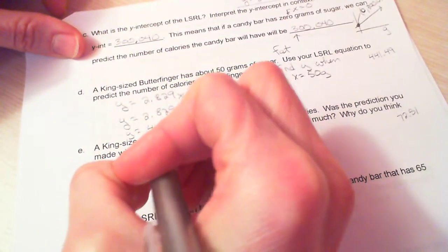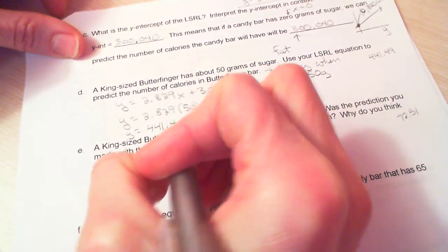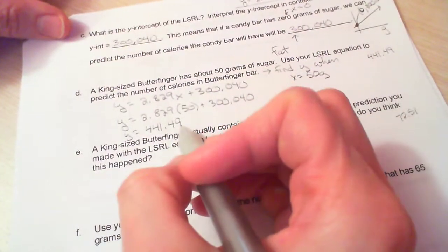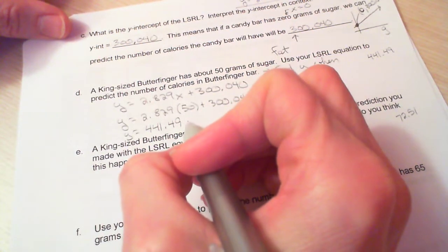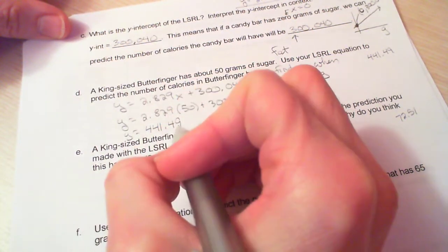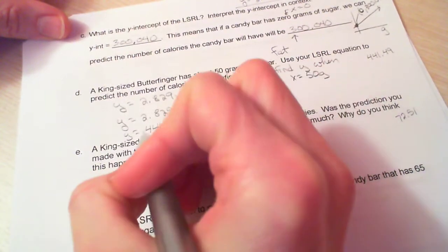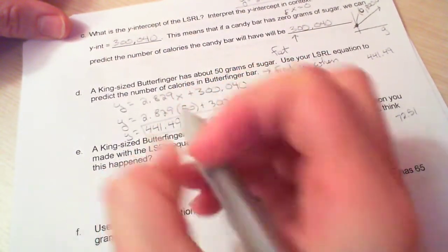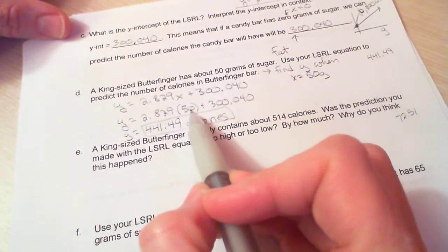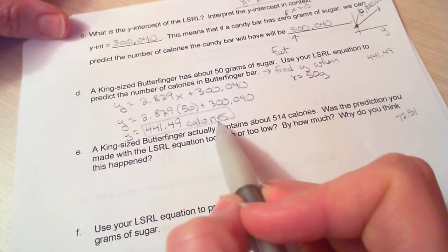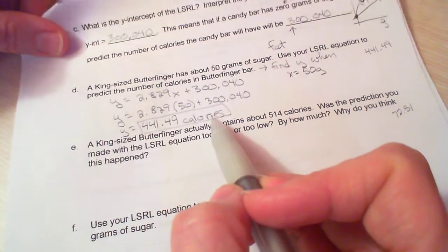So I'm going to do 2.829 times 50 plus 300.040, and I get 441.490. So y equals 441.49. Story problem requires a story answer. I have to have some units on here. So this would actually be y is calories. So this would be my answer: 50 grams of sugar for input yields 441.49 calories of output.